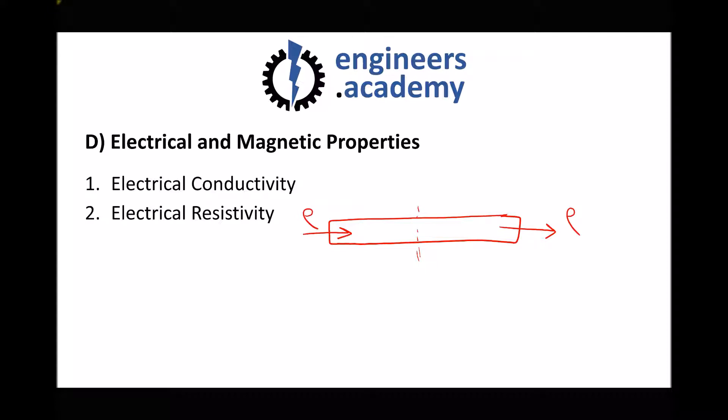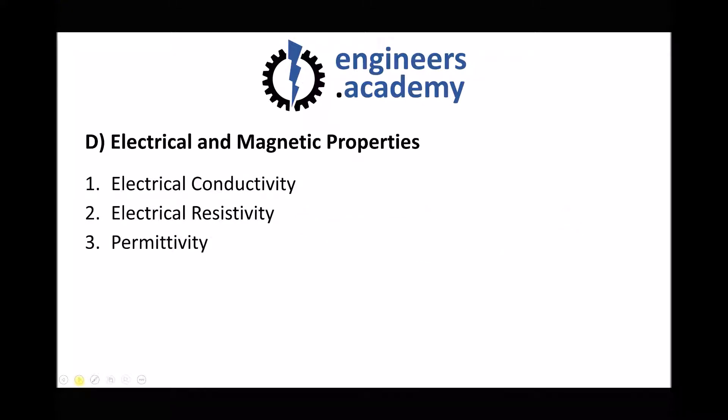Incidentally, materials that resist both electrical current and heat are called insulators. Next we have permittivity — permittivity is really about how readily a material allows an electric field to be set up.